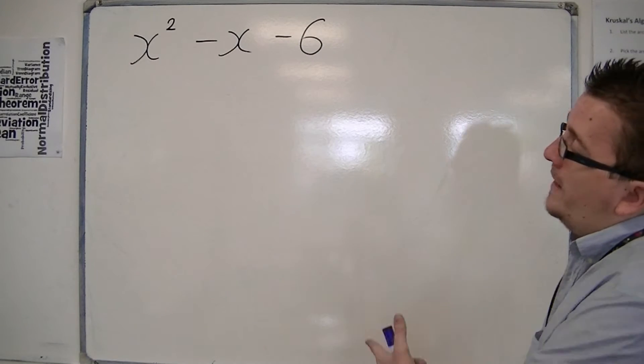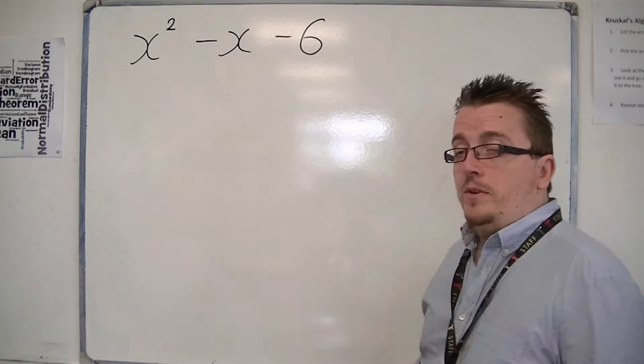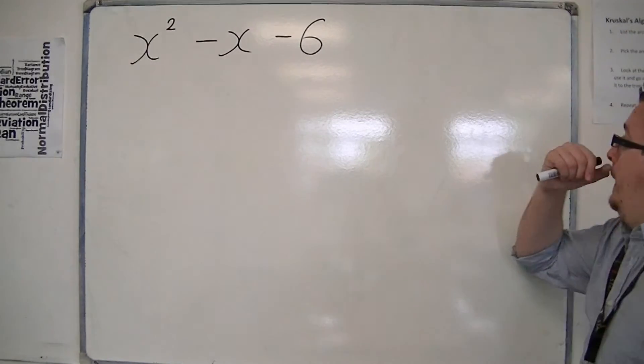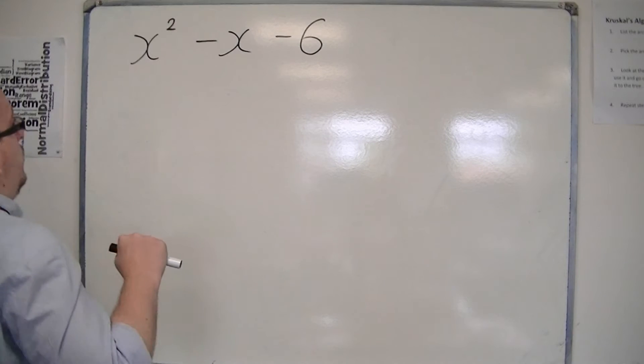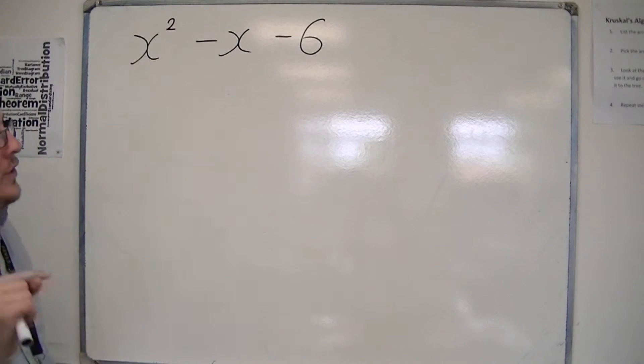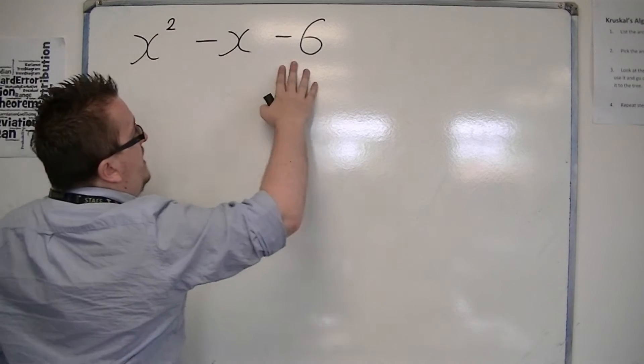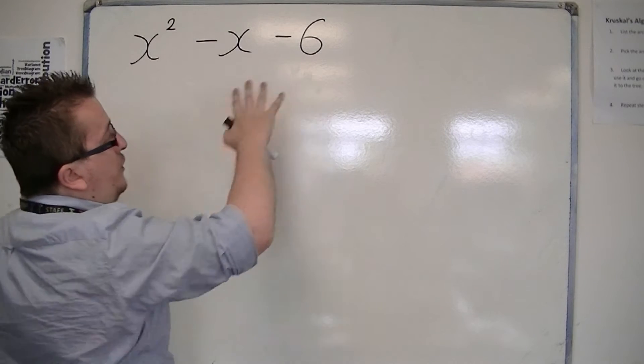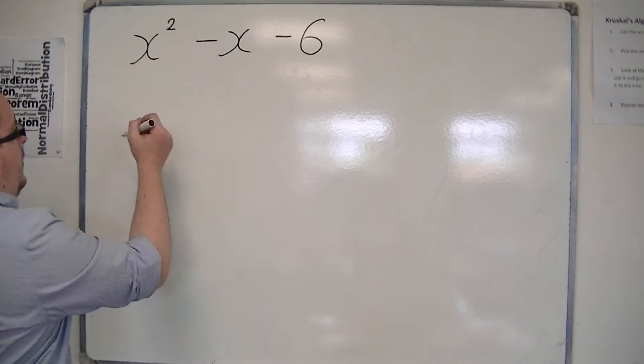I'm starting off with this example, x squared minus x minus 6. We need to be able to factorise this one. So you may well have been taught the technique that we need to be able to multiply the two numbers together. So by the two numbers, I mean...